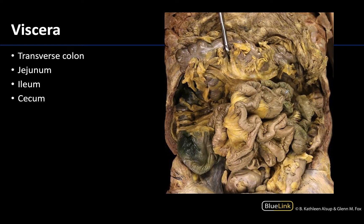Let's start with the viscera that is most superficial or easily accessible from an anterior view. Typically one of the most obvious things in this region is the small intestine, unless there is a noticeable amount of air in parts of the large intestine. I'm going to circle the general area of the small intestine — it tends to be a bit more towards the midline or medial, but of course it will also expand throughout the region.